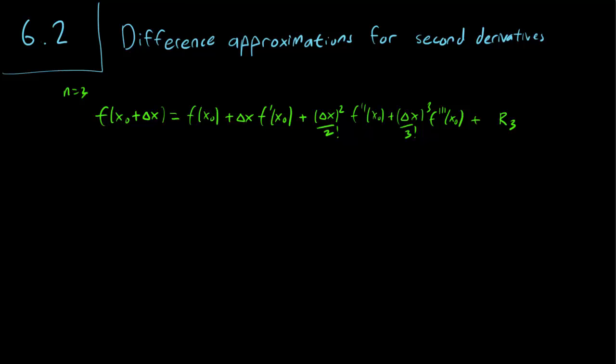Let's look at the Taylor series with n equals 3. It looks like this, and we should write down the remainder explicitly.